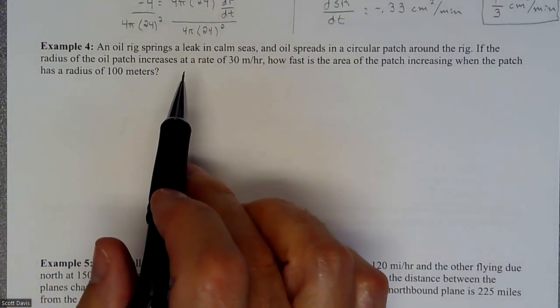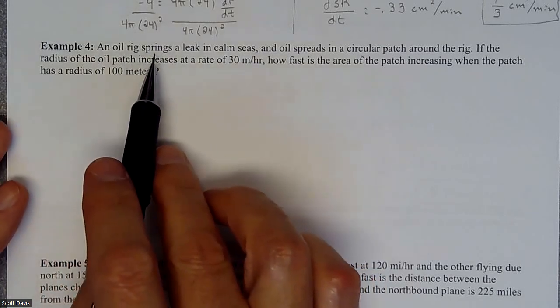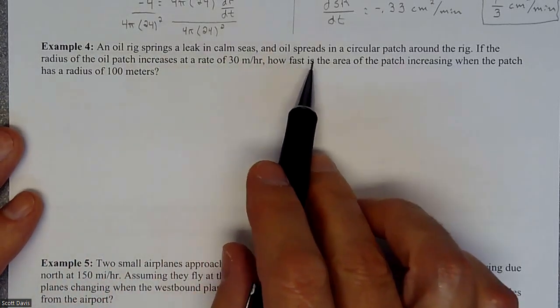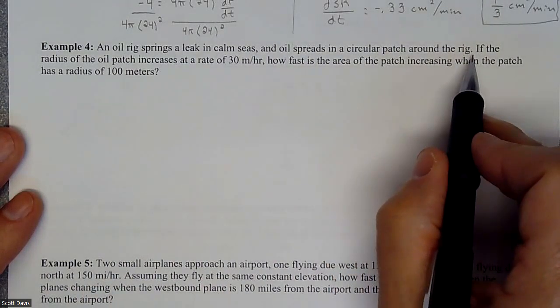In this example we have ourselves a related rate problem. We have an oil rig that springs a leak in calm seas and the oil spreads in a circular patch around the rig.